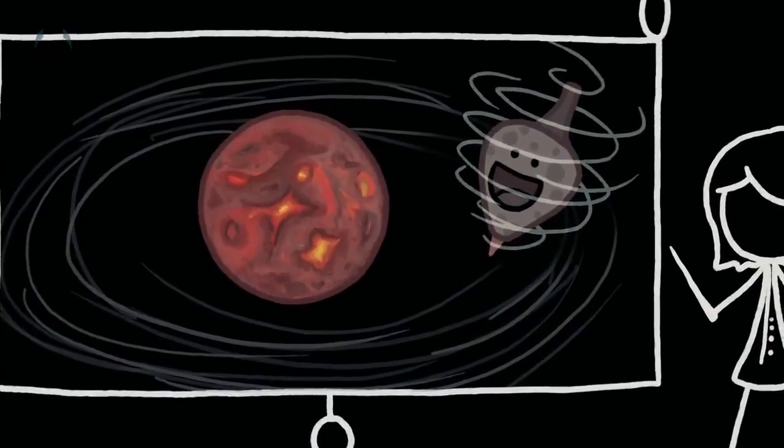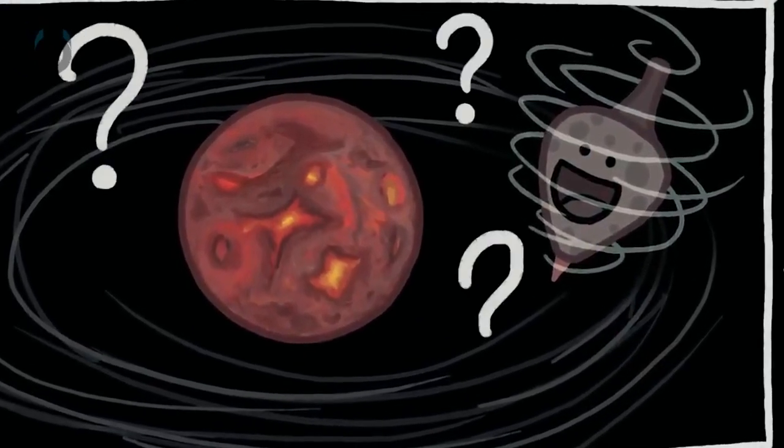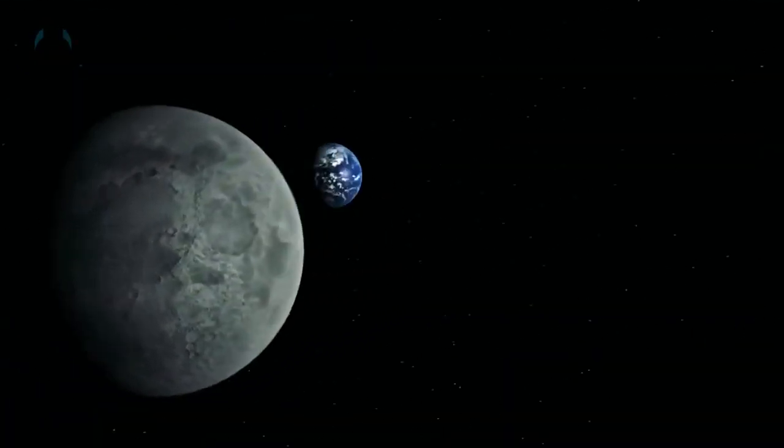In our early solar system, both the Earth and the Moon rotated independently of each other. But the Earth's gravity grabbed onto the tidal bulges and slowed down the rotation of the Moon.